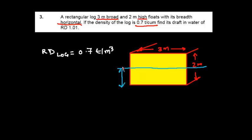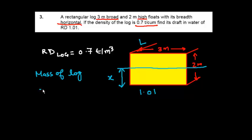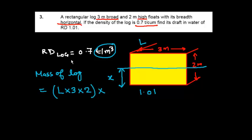The draft is from keel to water line, and we suppose this is X. It is floating in water of relative density 1.01. Assume the length of this log is L. The mass of the log equals volume of log — length into breadth into height (2 meters) — into density, which we write as 0.7.